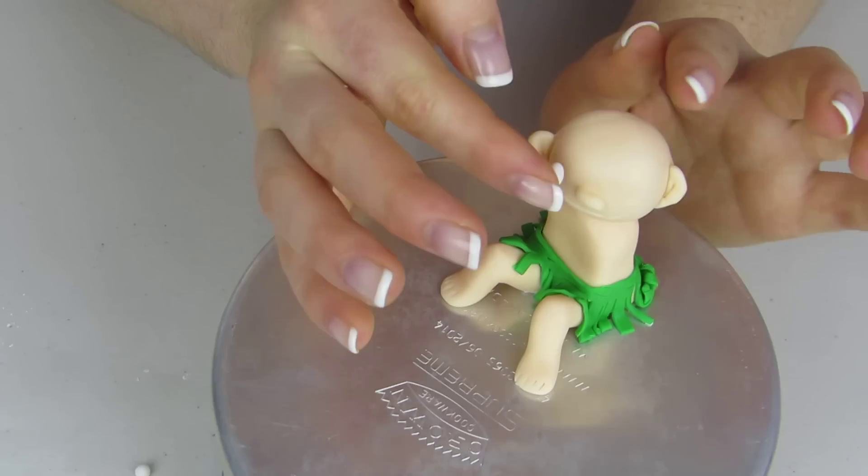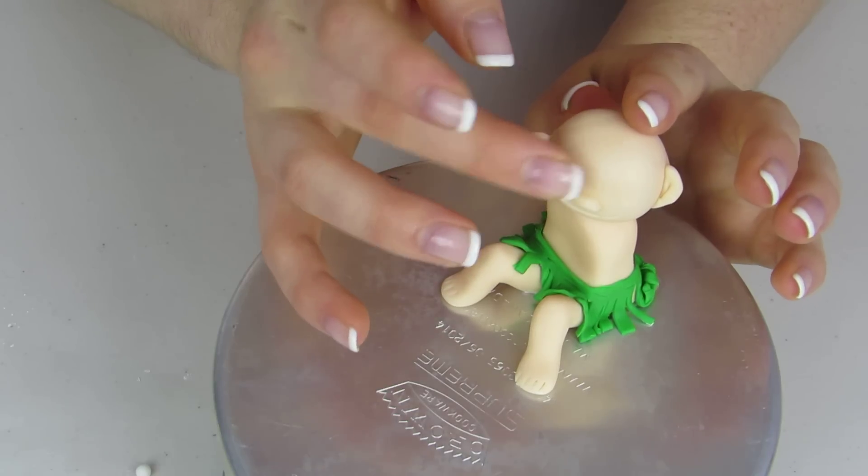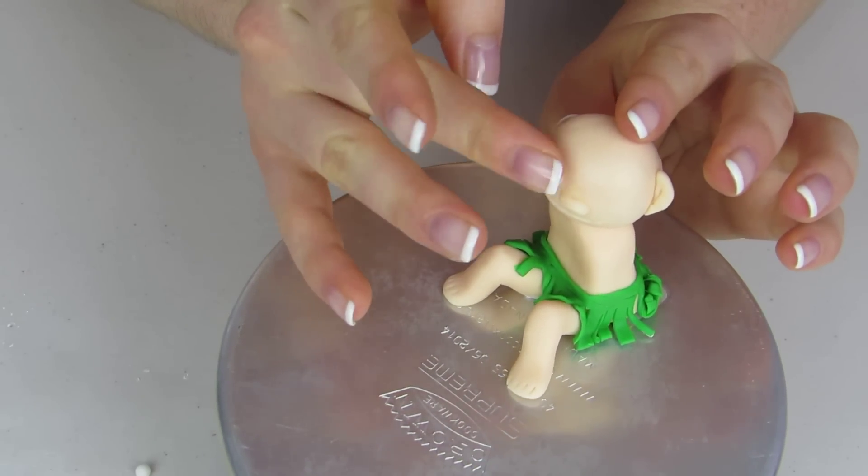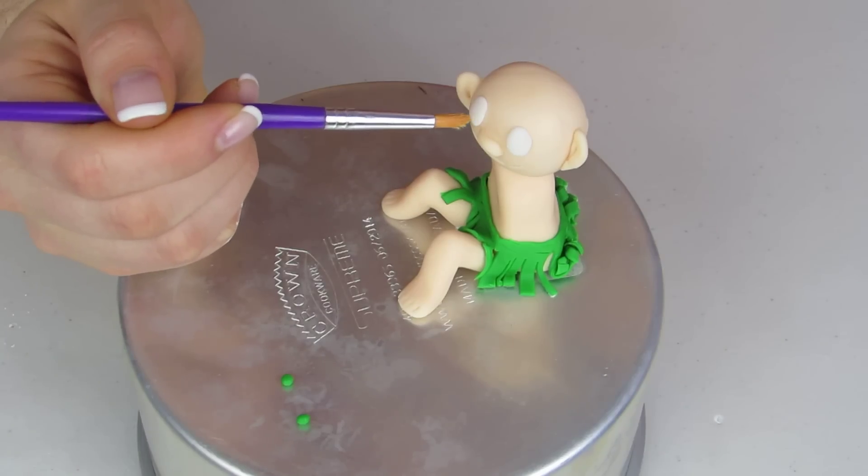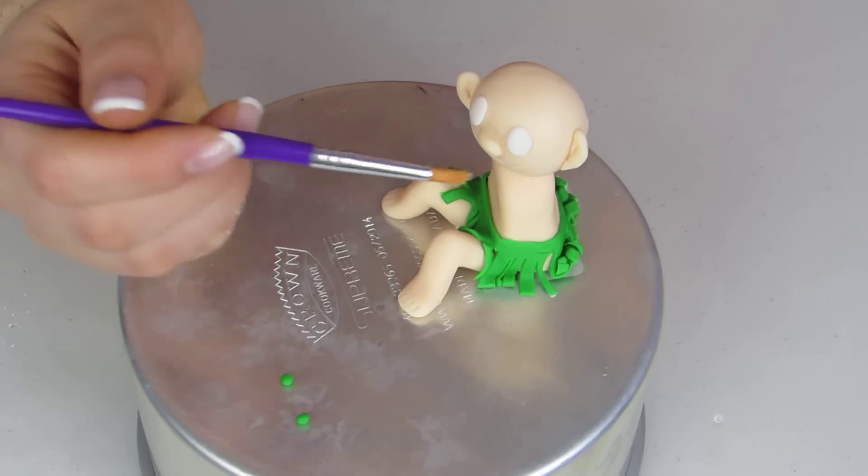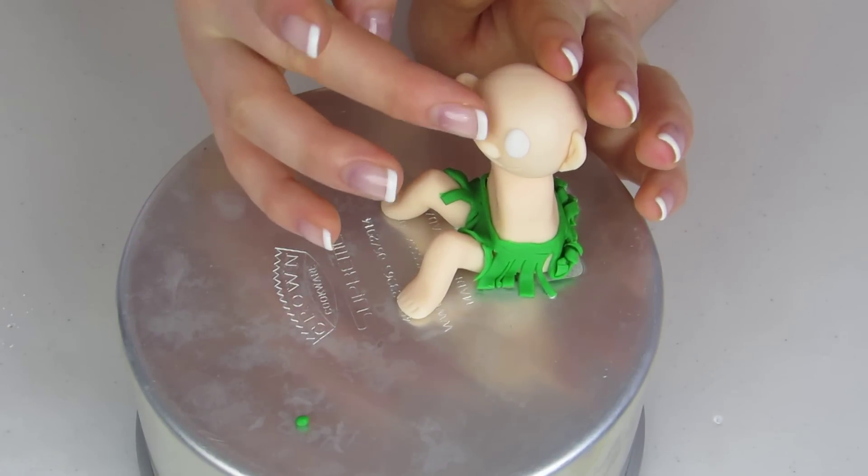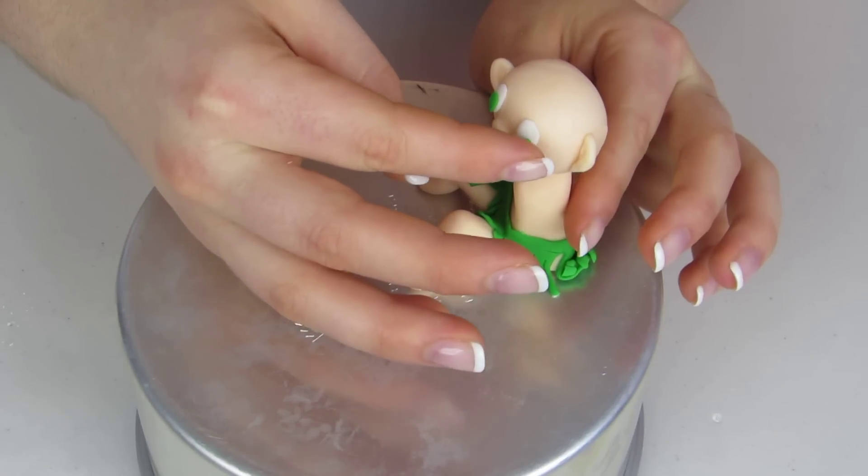And then we're gonna start layering up his eyes starting with some white fondant. Now all of my fondant today I've added some Tylose powder to it so that way it dries nice and hard. But you can also use gum paste if you don't have any Tylose powder. And that's just so it holds a little bit more structure.